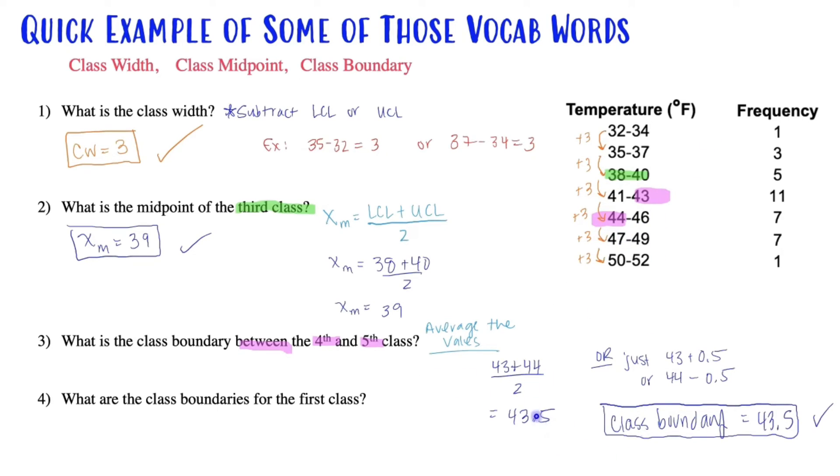You'll have like one or two practice problems in your homework. What are the class boundaries for the first class? Here's my first class. What are the class boundaries? Well, I could quickly just add and subtract 0.5 from both to get my class boundaries of 31.5 to 34.5. This is my lower class boundary. This is my upper class boundary. That would be the vocabulary words I would use to describe this.